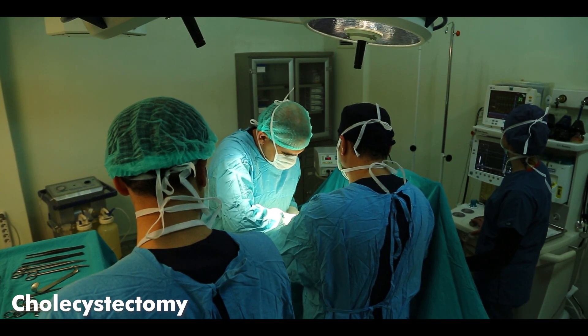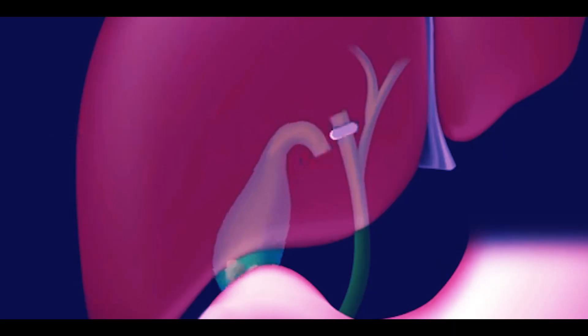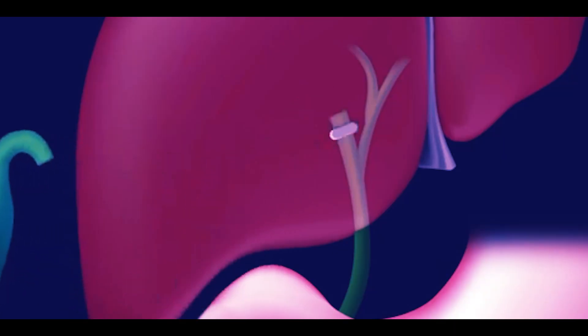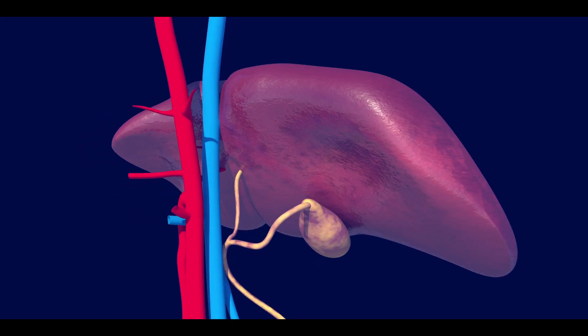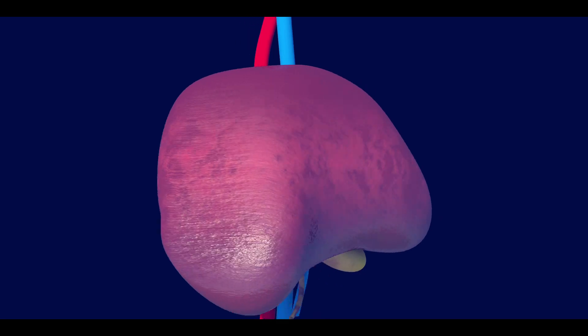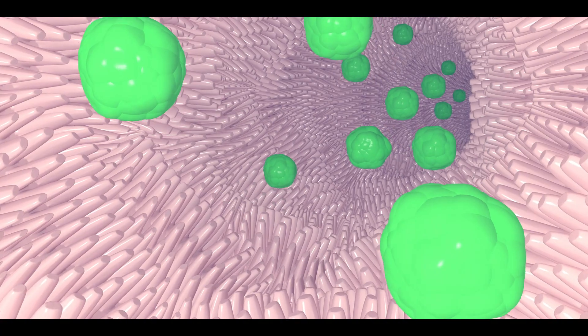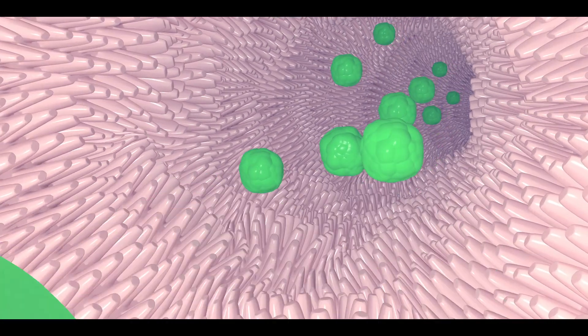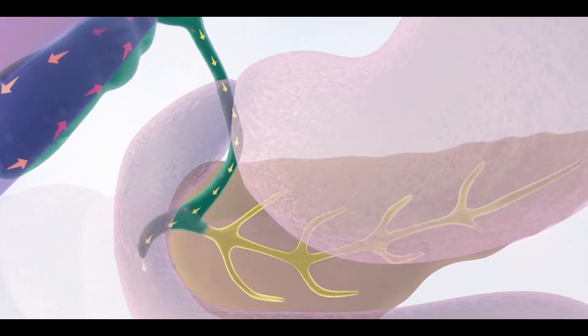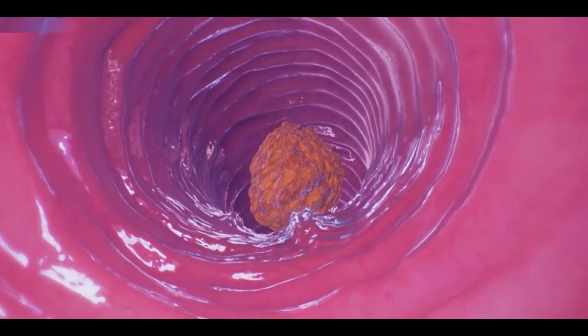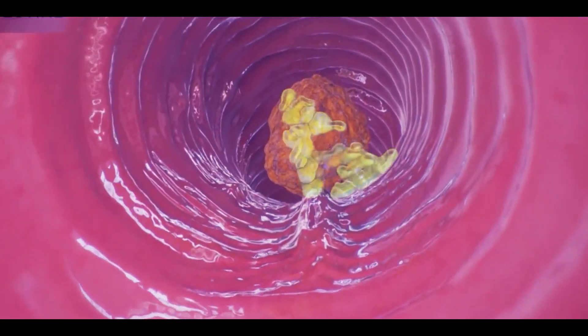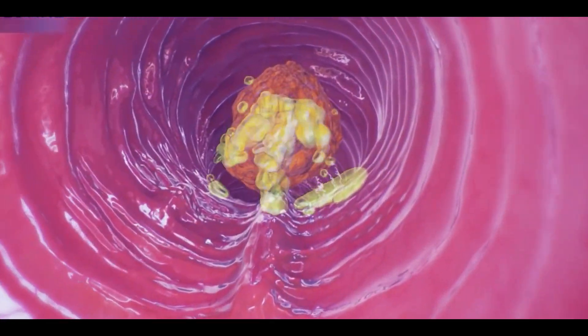Cholecystectomy is a surgical procedure to remove the gallbladder. The liver produces bile, which is stored in the gallbladder and released into the small intestine through the bile duct, where bile digests fats in the small intestine.